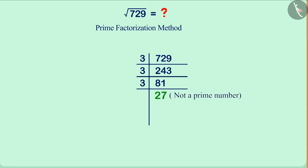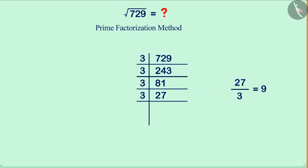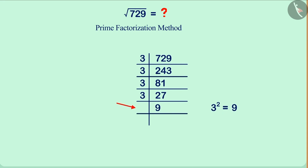27 is not a prime number. 3 is the prime factor of 27. Write it in its designated place. Dividing 27 by 3 gives us 9. Write 9 under 27. We know that the square of 3 is equal to 9, so we will write 3 in the first column of the fifth row and also under 9.